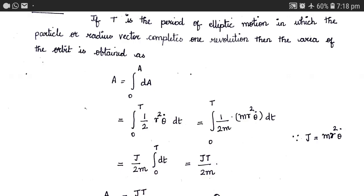The area A can be obtained by integrating dA between the limits 0 to A. The value of dA has already been derived in the previous video — that is the area covered per unit time, which is equal to half r squared theta dot. So the value of dA is half r squared theta dot.